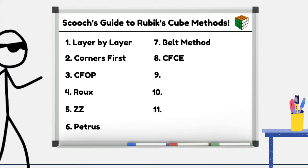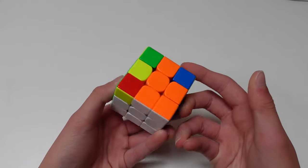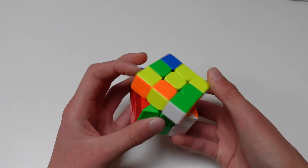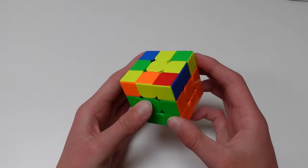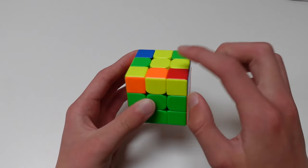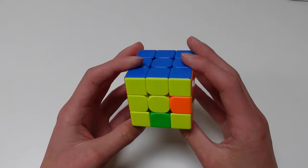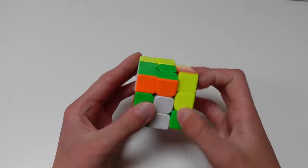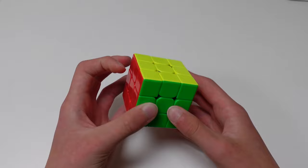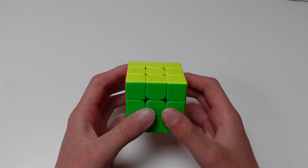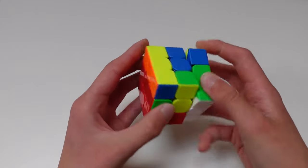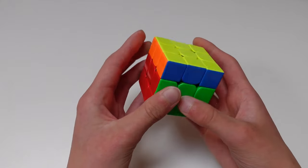Number 8, CFCE. This method is very similar to CFOP. You do the cross and F2L as usual, but then, instead of orienting the top, you first solve the four corners using one of 42 algorithms. This is called CLL. Finally, you do ELL, which is solving the edges of the last layer using one of 29 algorithms. This method isn't too bad, but not a lot of people use it, as some of the cases have bad algorithms and are hard to recognize.